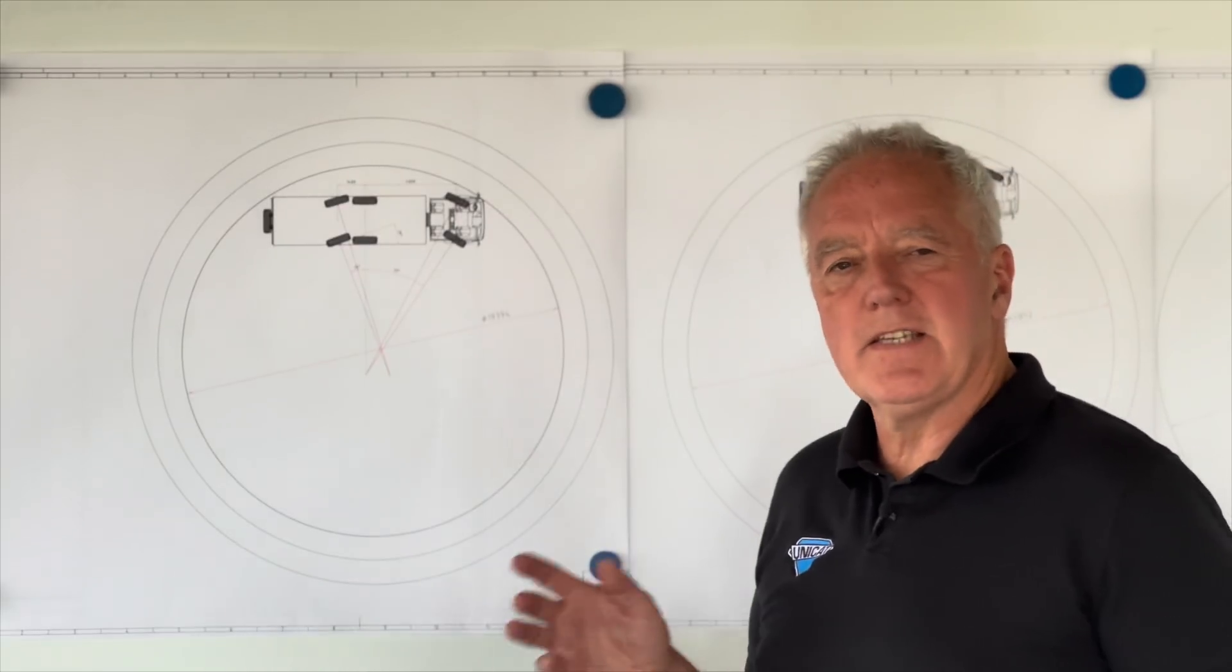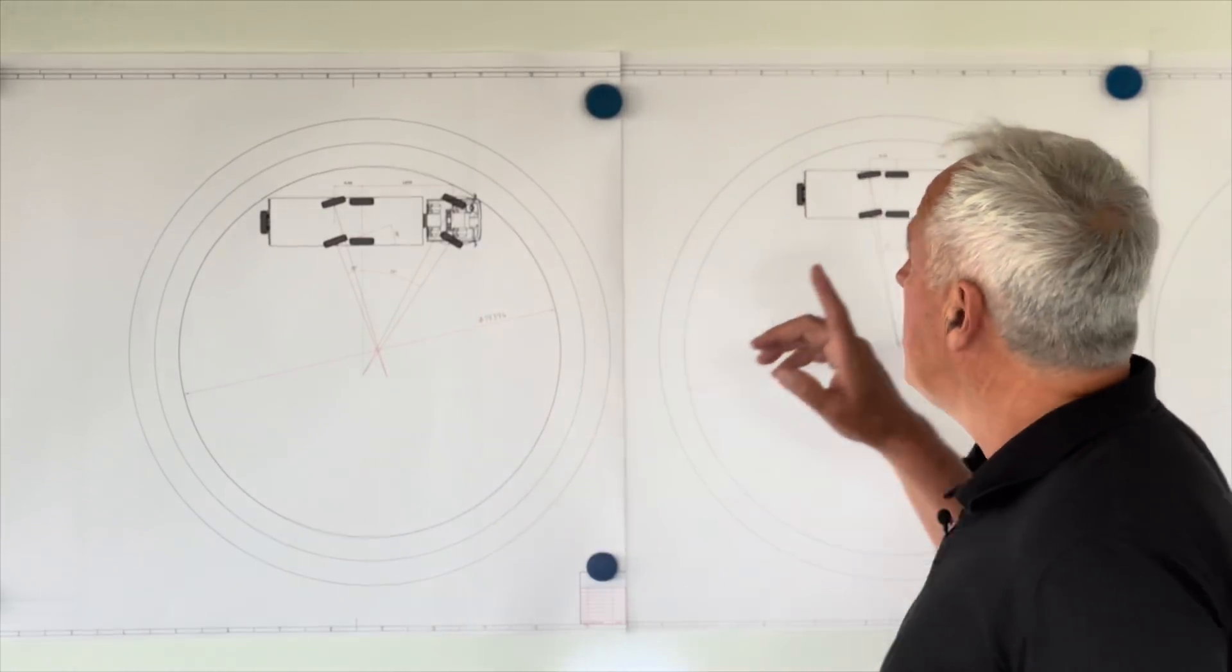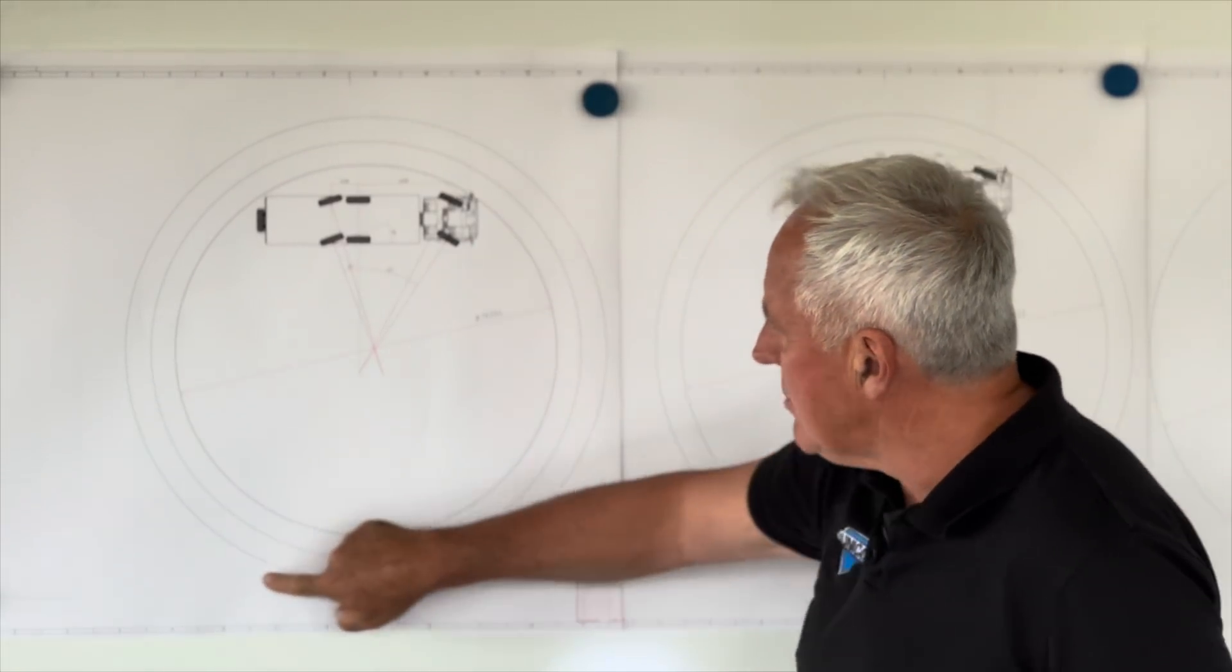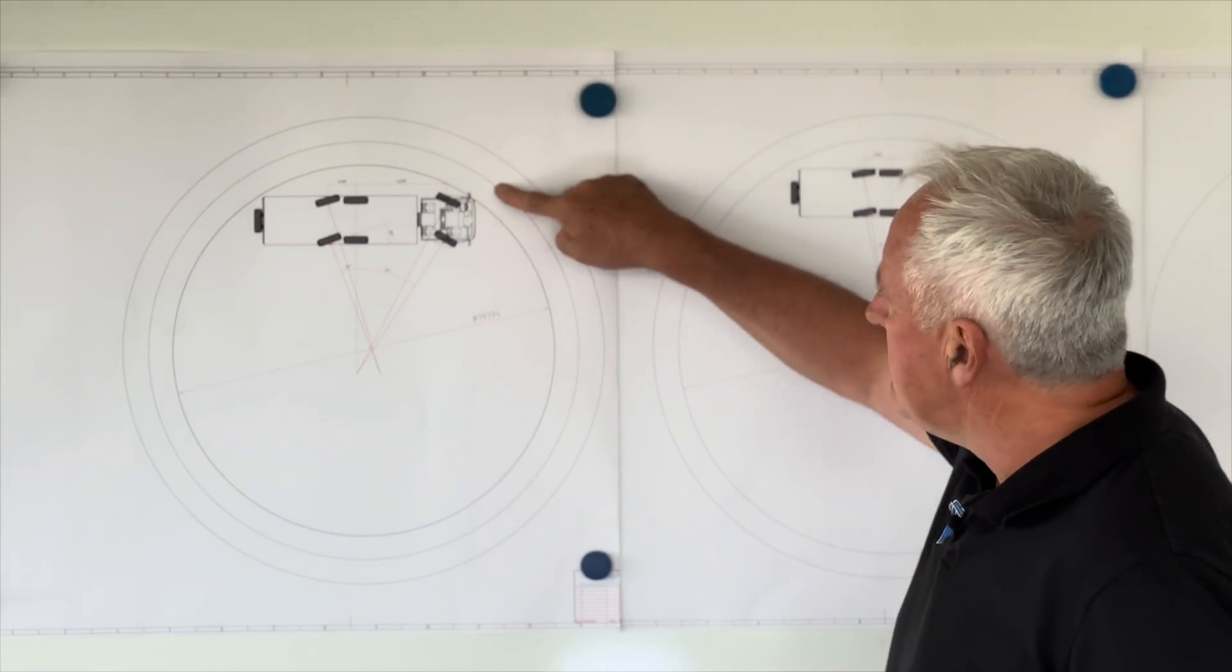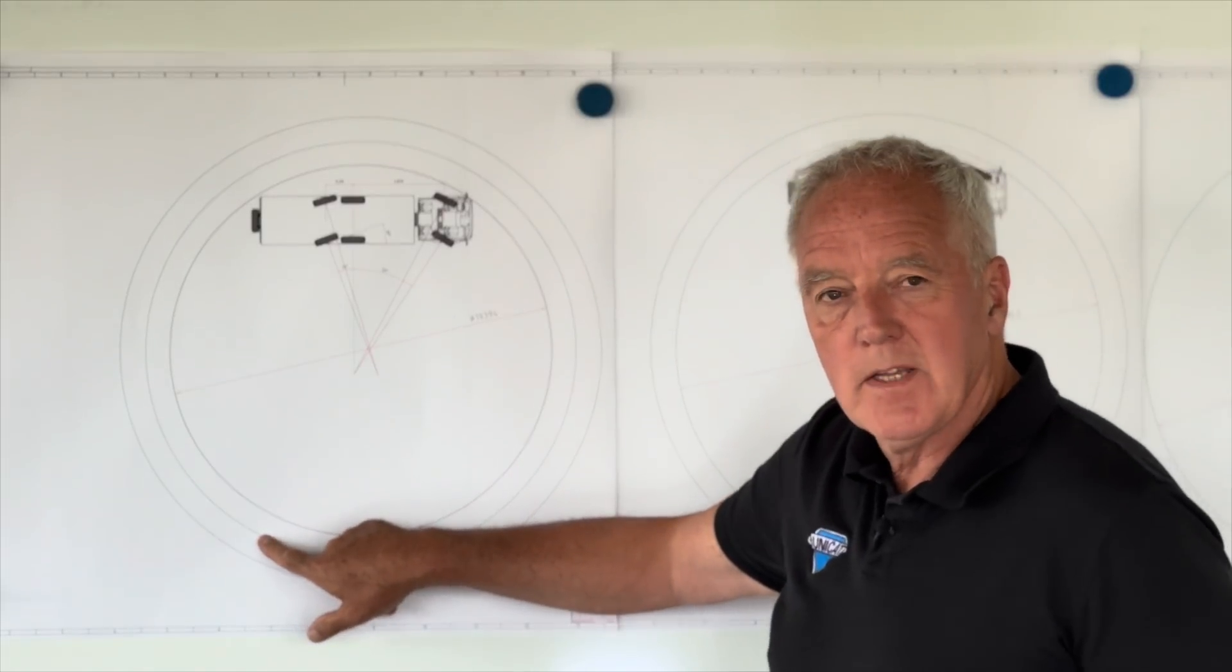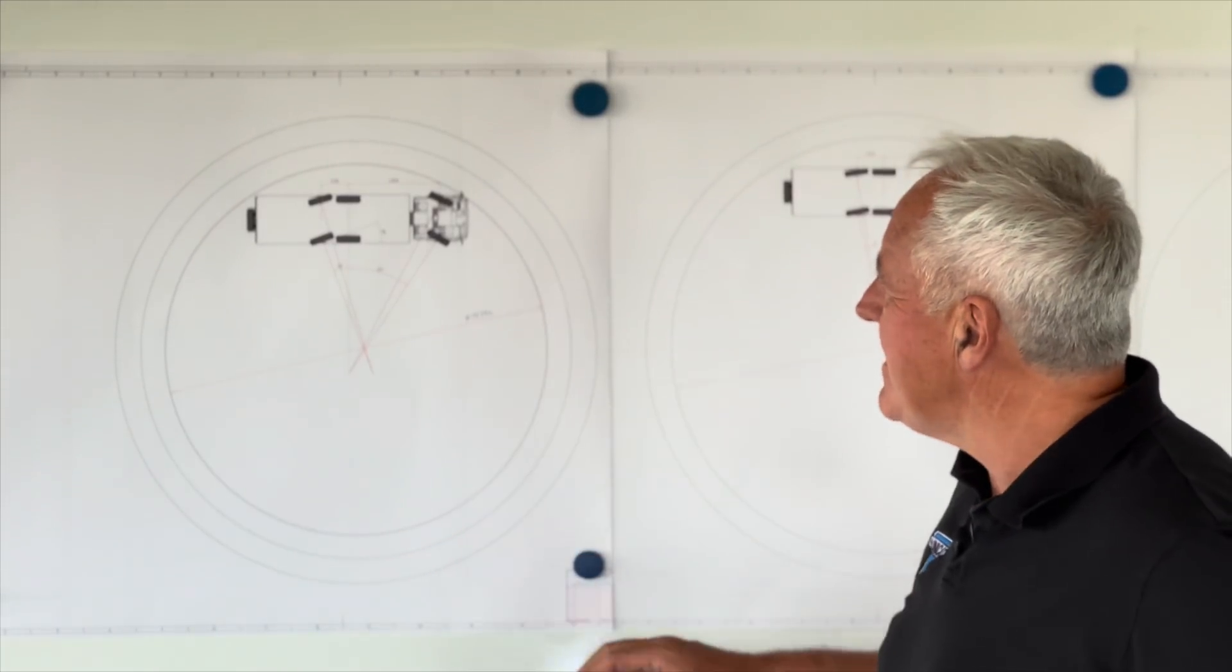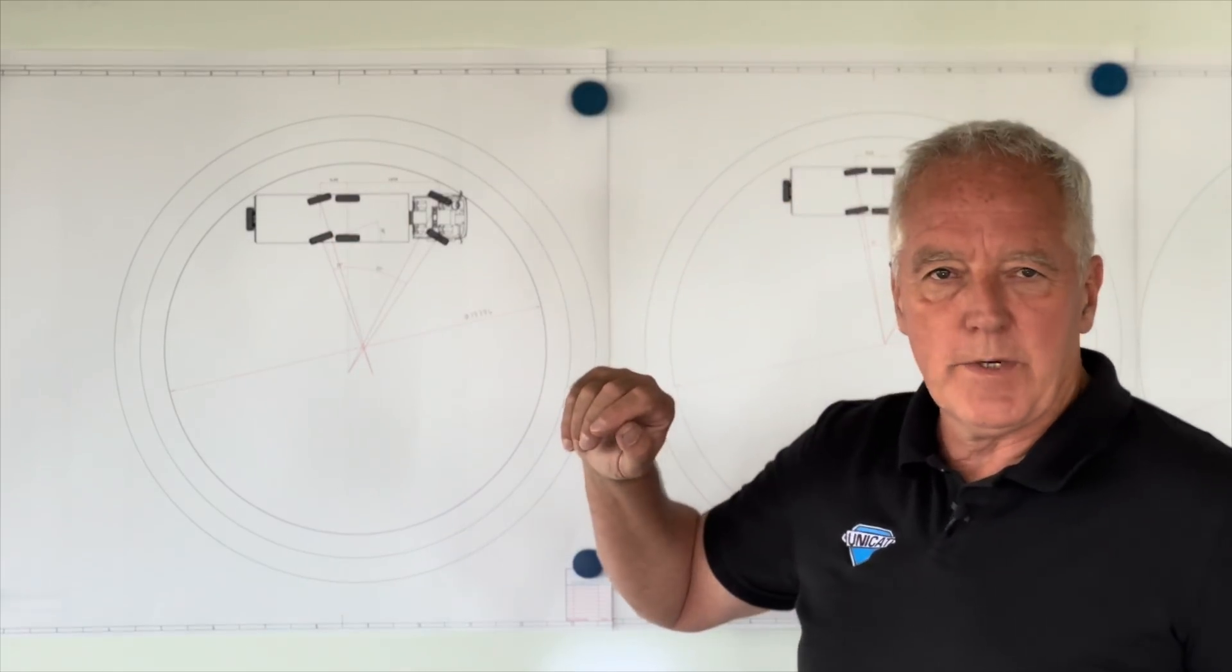Now you have seen that with the rear axle steering, we have gone from 24.4 meters turning circle, which is this circle out here, to 21.8 meters turning circle, which is this one here. But as you can see here, we can even do better. How can we do better? Very easy. If we oversteer the rear axle.